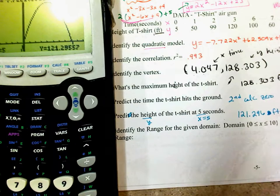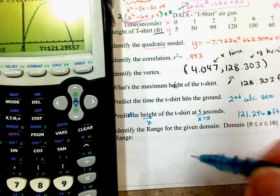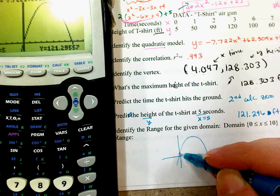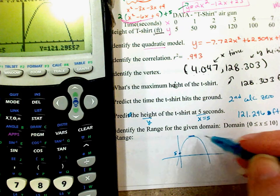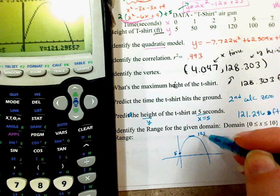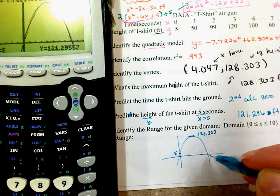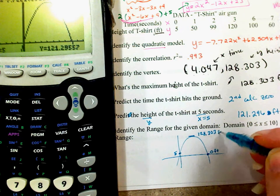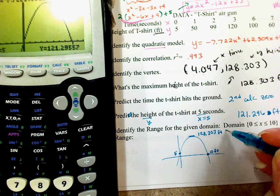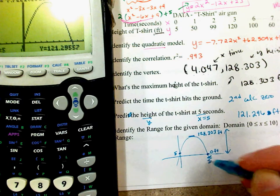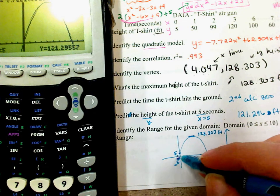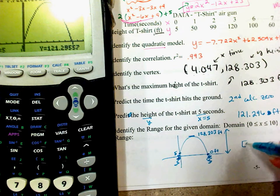Identify the range for the given domain. The t-shirt started at a height of 5 feet, maxed out at 128.303 feet, and ended at 0 feet. So the range goes from 0 feet up to 128.303 feet.